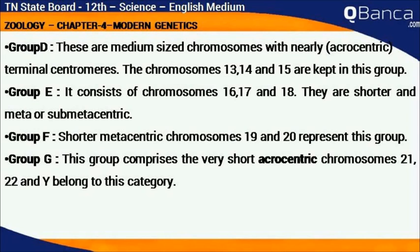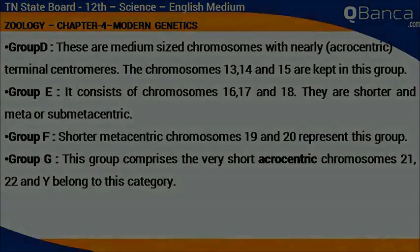Group G comprises the very short acrocentric chromosomes 21, 22, and Y, which belong to this category.